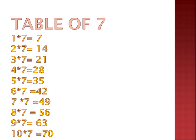Again from the beginning: 1 seven is 7, 2 sevens are 14, 3 sevens are 21, 4 sevens are 28, 5 sevens are 35, 6 sevens are 42, 7 sevens are 49, 8 sevens are 56, 9 sevens are 63, 10 sevens are 70.